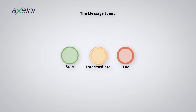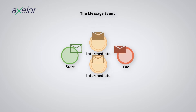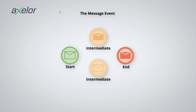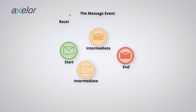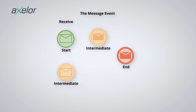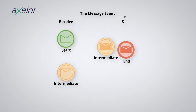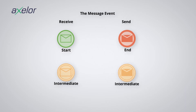Let's start with the message event. These are events represented with an envelope pictogram. They can be one of two types: send or receive. Receive messages are represented by a thin outline. On the contrary, send messages are symbolized by a full shape and send a message as soon as a token is received. A message event establishes a unique relationship between sender and receiver.